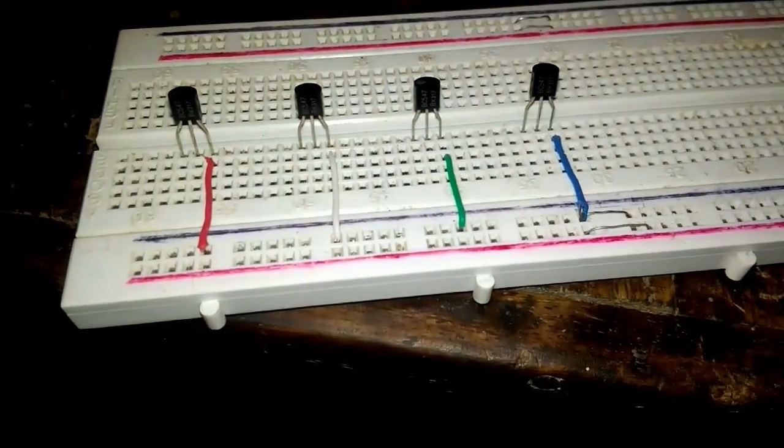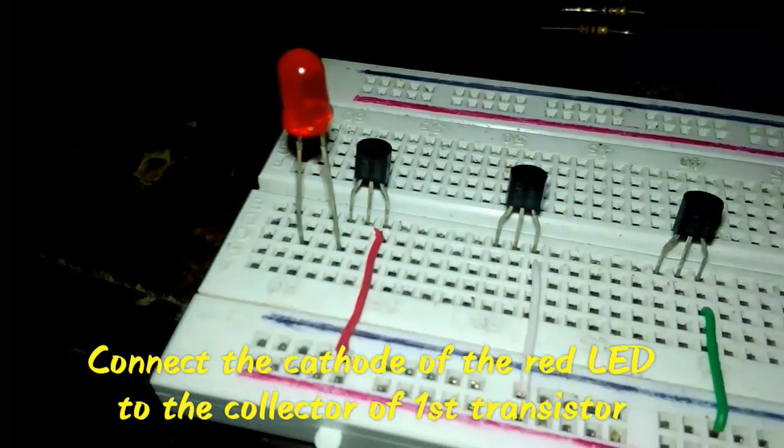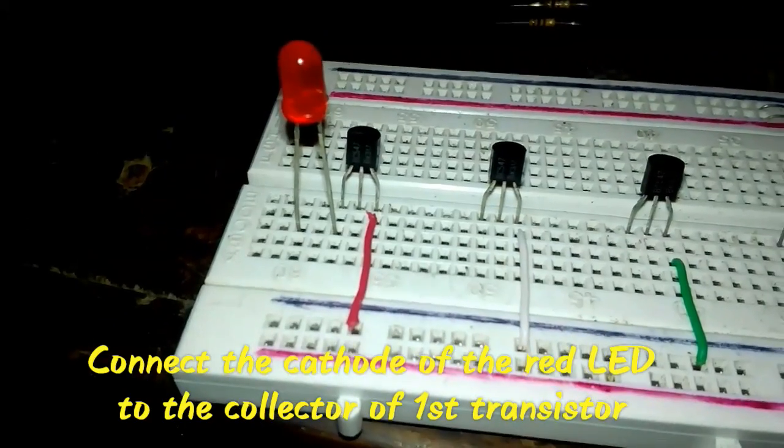Now connect the cathode of the red LED to the collector of the first transistor. As you already know, the shorter part of the LED is the cathode.